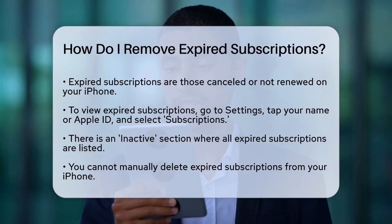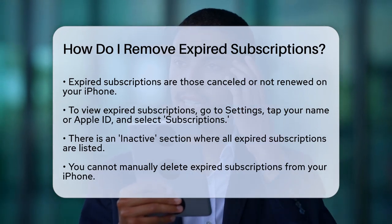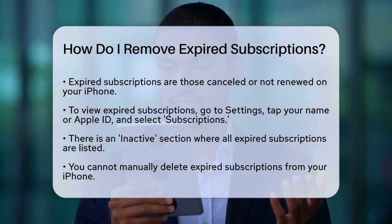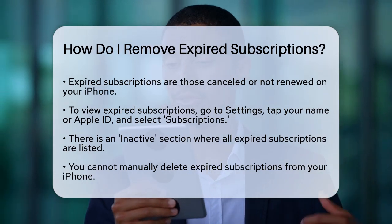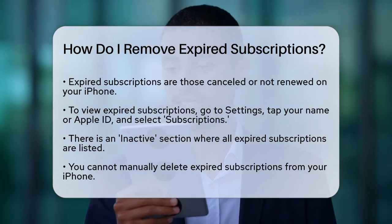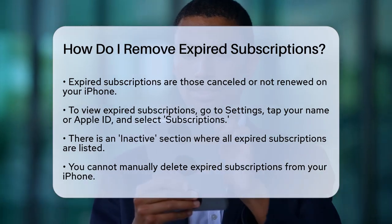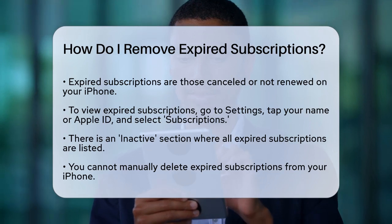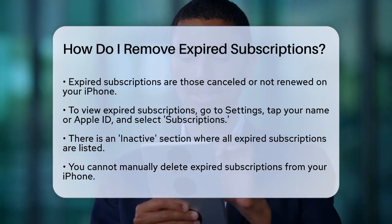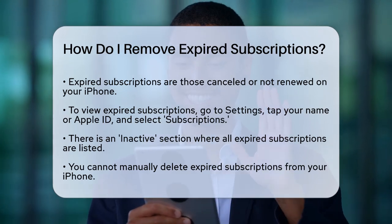To see these subscriptions, go to your iPhone's Settings app, tap on your name or Apple ID profile at the top, and then tap on Subscriptions. Here, you'll find an inactive section where all your expired subscriptions are listed.